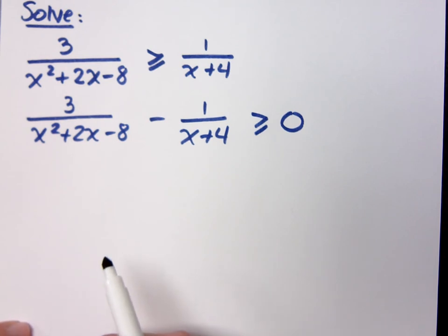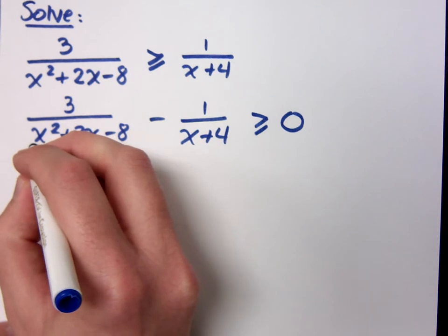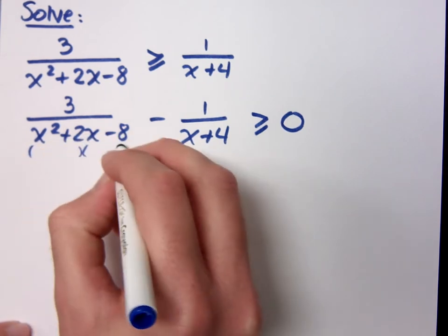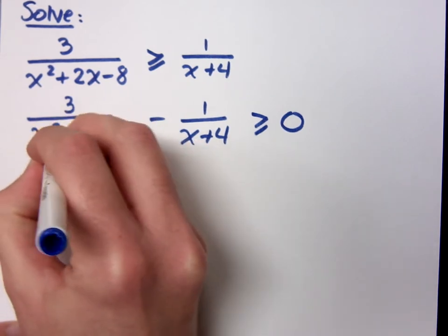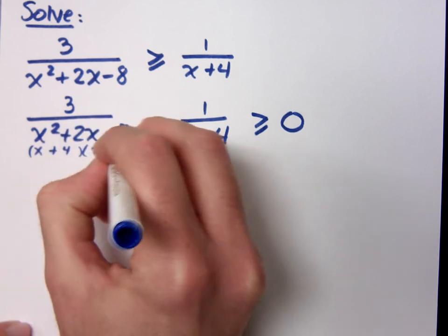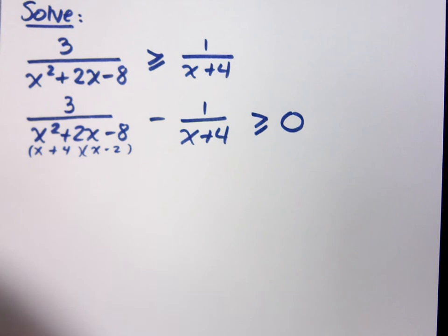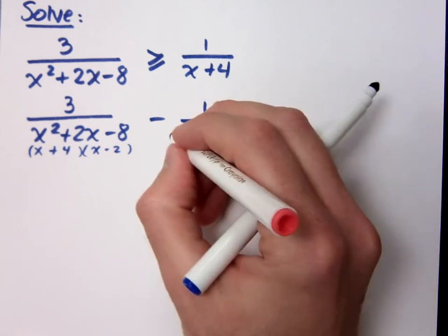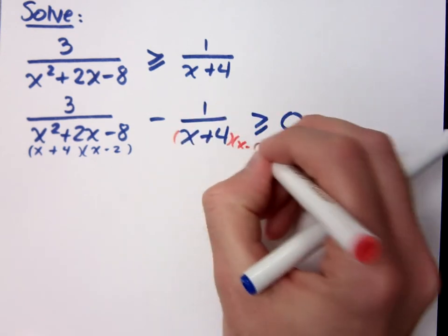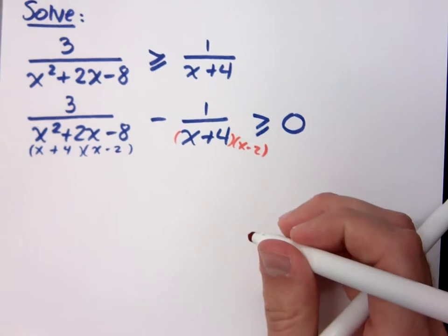I have to get a common denominator. What are the factors here for this guy? x plus 4 and x minus 2. This guy's just x plus 4. So what factor is he missing? He's missing the x minus 2.